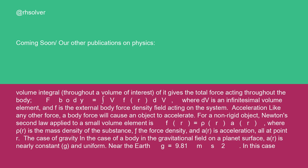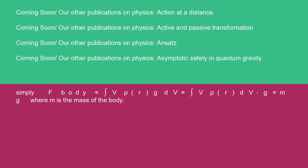The case of gravity: in the case of a body in the gravitational field on a planet's surface, a(r) is nearly constant g and uniform. Near the earth, g = 9.81 m/s². In this case, simply F_body = ∫_V ρ(r) g dV = ∫_V ρ(r) dV g = mg, where m is the mass of the body.